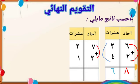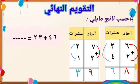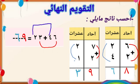ننتقل إلى العشرات: اثنان زائد واحد يساوي ثلاثة. المجموع: تسعة وثلاثون. ماذا نسمي هذا الجمع؟ الجمع العامودي، أحسنت. التدريب الثالث: ستة وأربعون زائد ثلاثة وعشرون. ستة زائد ثلاثة يساوي تسعة، وأربعة زائد اثنان يساوي ستة. الناتج: تسعة وستون، جيد.